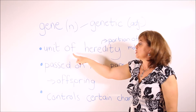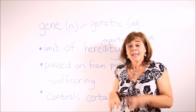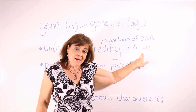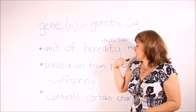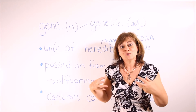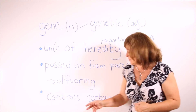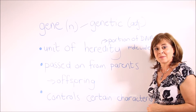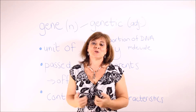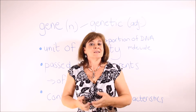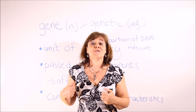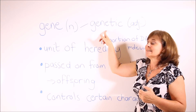Now for the word gene. A gene is a unit of heredity — it is a portion of a DNA molecule. Genes are passed on from parents to their offspring and they control certain physical and mental characteristics. For instance, your hair color and eye color are determined by your genes. The adjectival form of the noun gene is genetic.